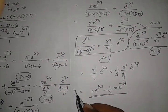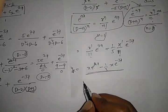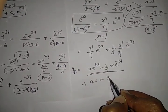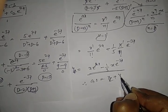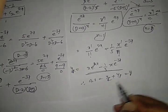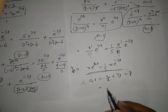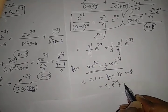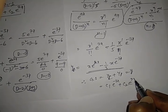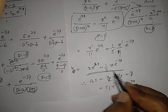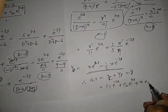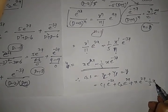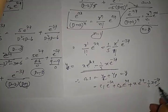The general solution is y = yc + yp, which equals c1·e^(-3x) + c2·e^(2x) + x·e^(2x) - (1/5)·x·e^(-3x).